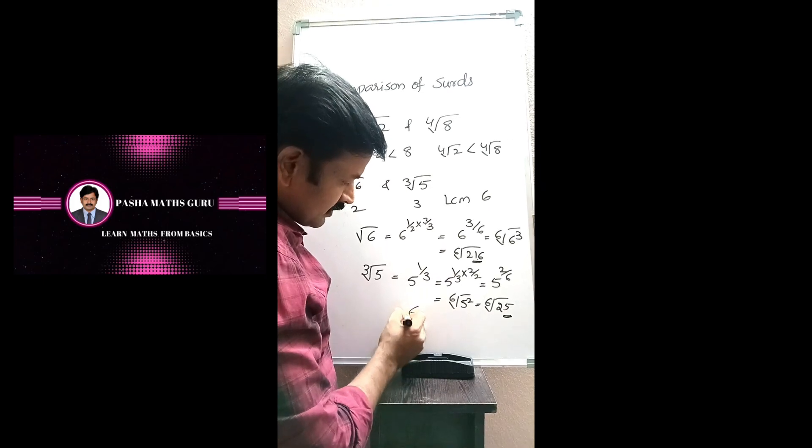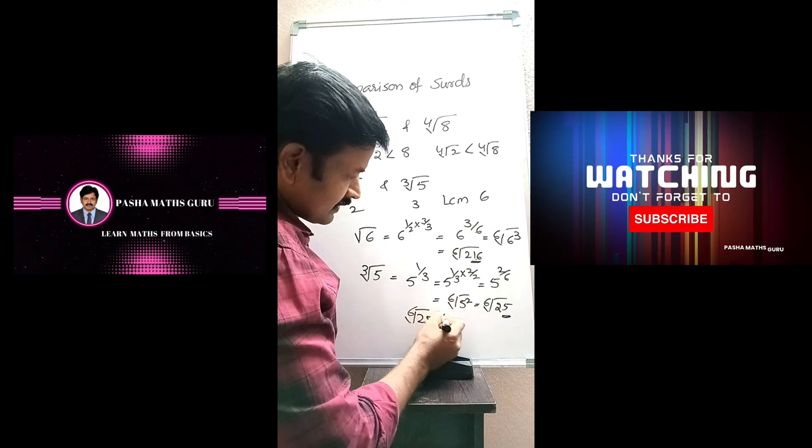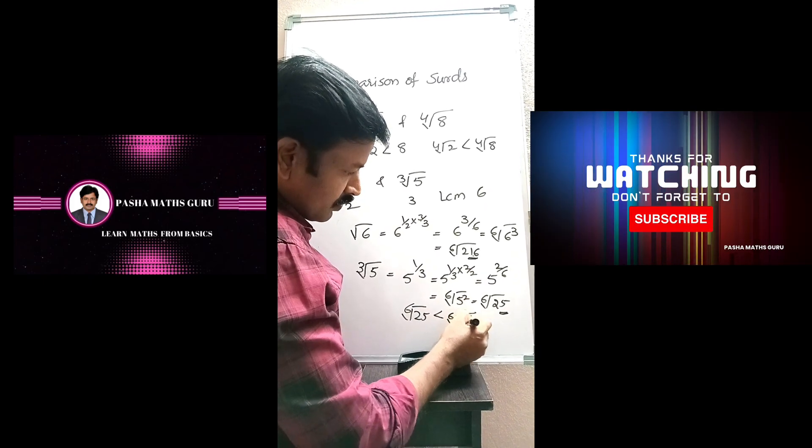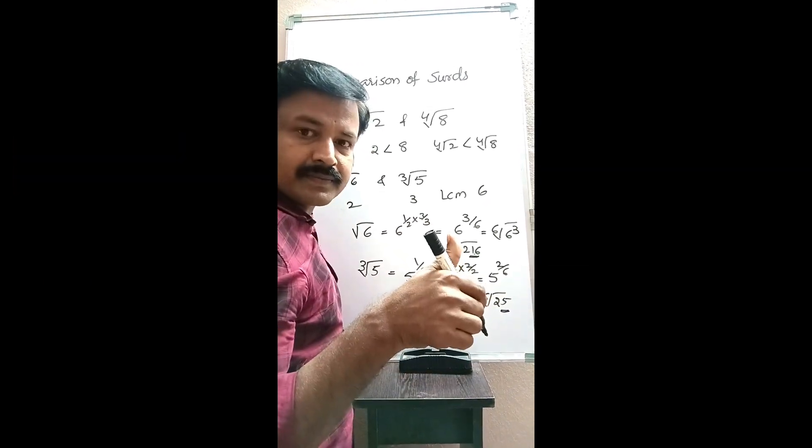As 25 is less than 216, 6th root 25 less than 6th root 216.